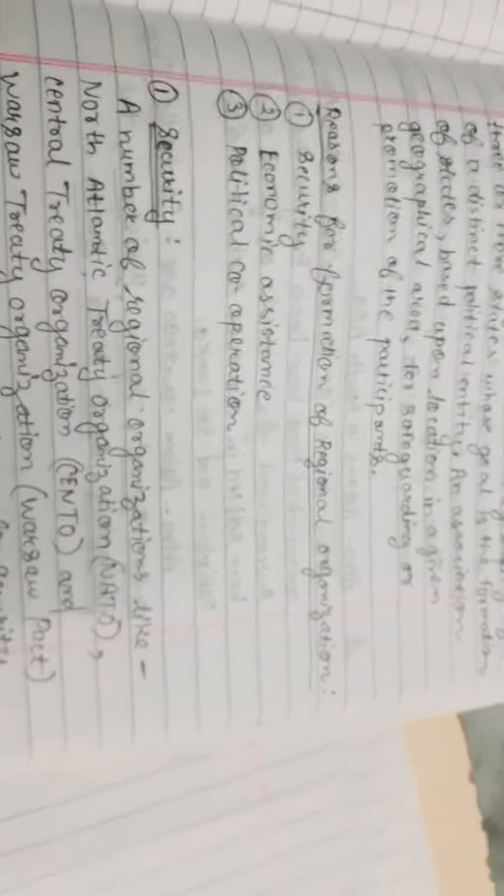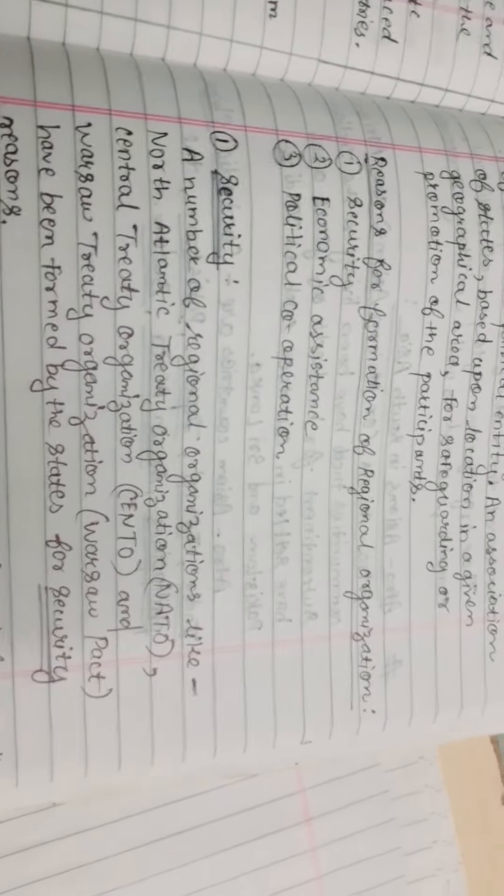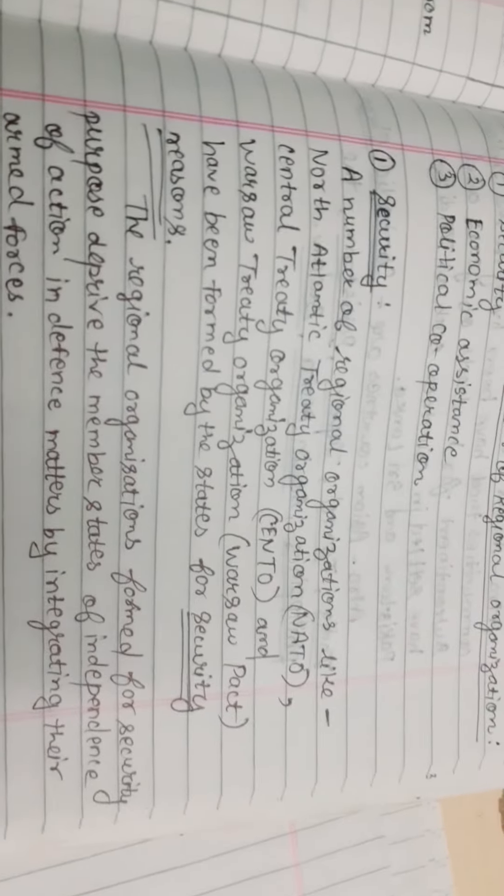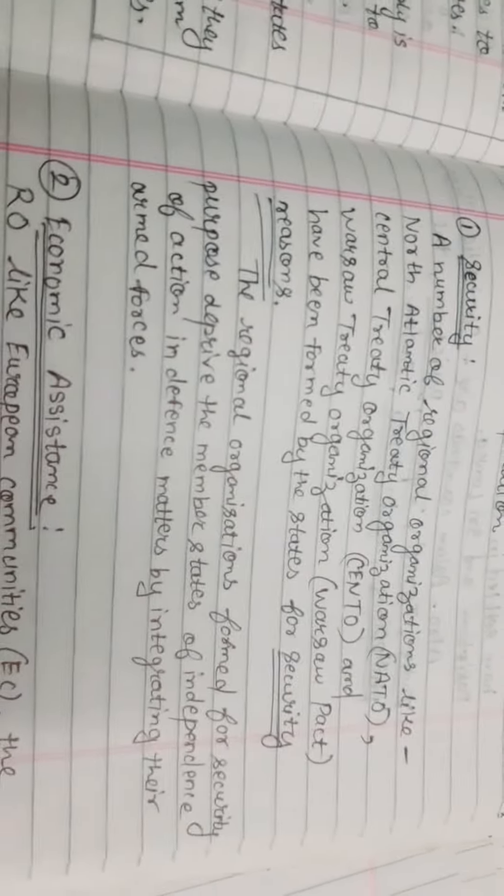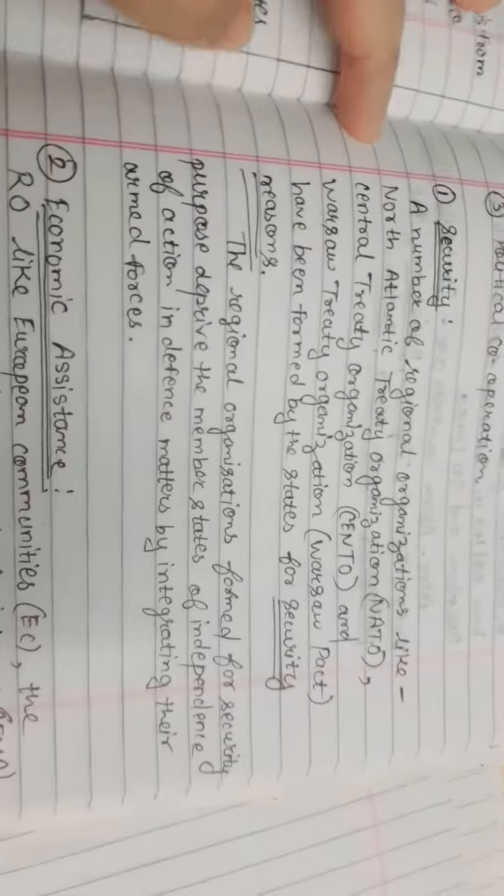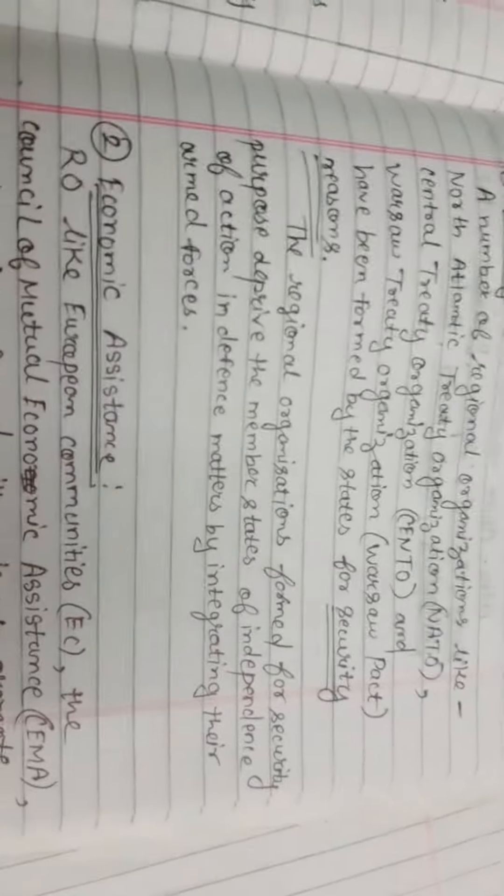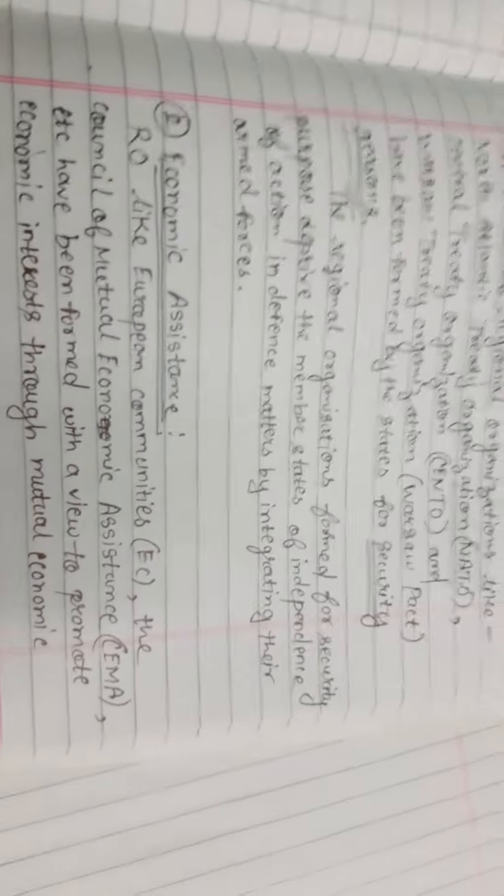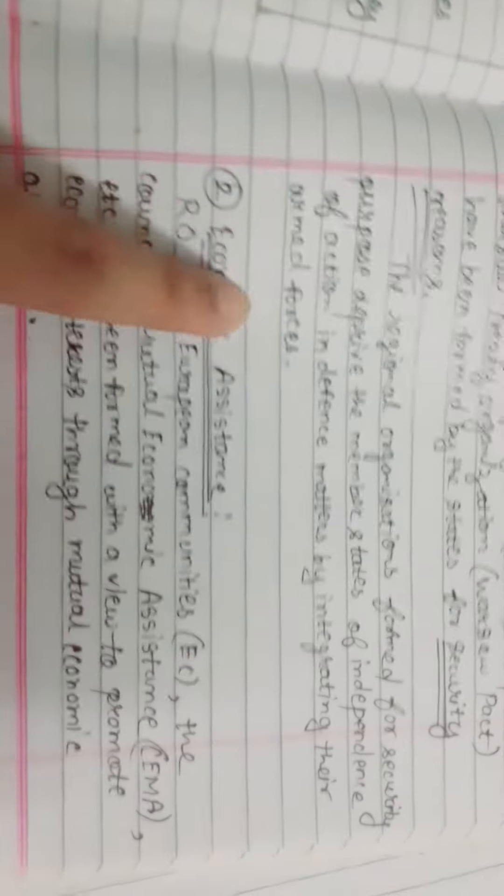Reasons for formation of regional organizations include security, economic assistance, and political cooperation. For security, organizations like North Atlantic Treaty Organization, Central Treaty Organization, and Warsaw Treaty Organization have been formed. Regional organizations formed for security purposes deprive member states of independence of action in defense matters by integrating their armed forces.